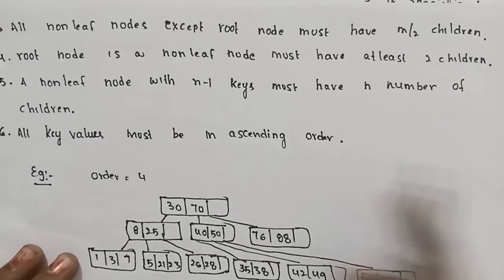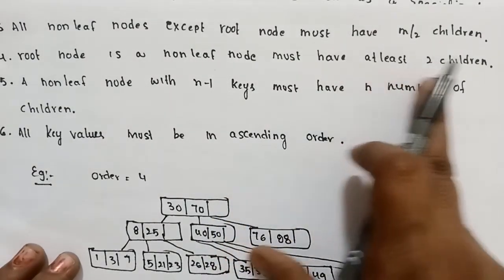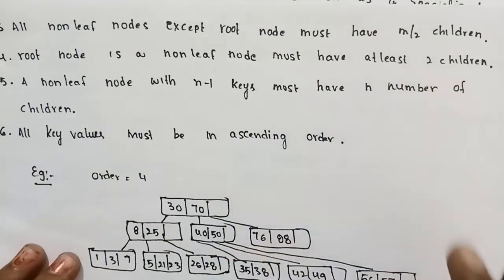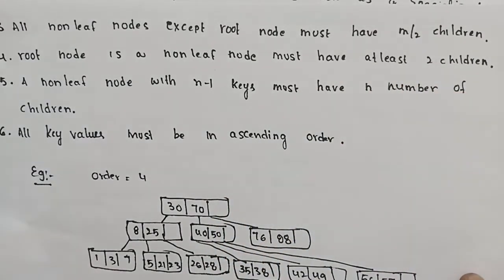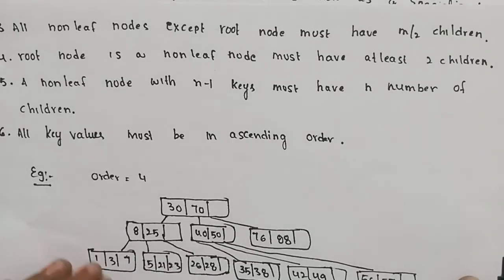The next property: the root node, if it is a non-leaf node, must have at least 2 children. The root node compulsorily has 2 children.